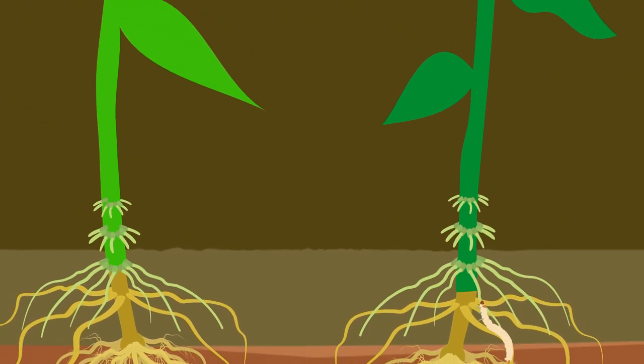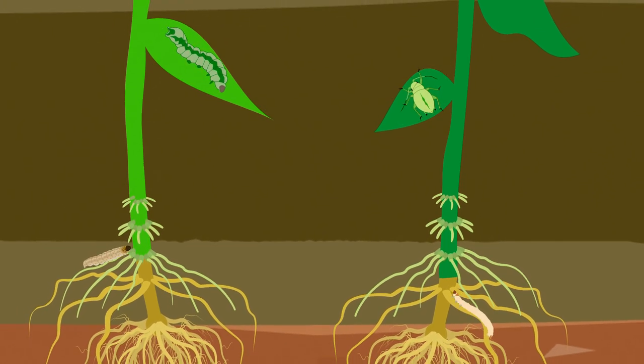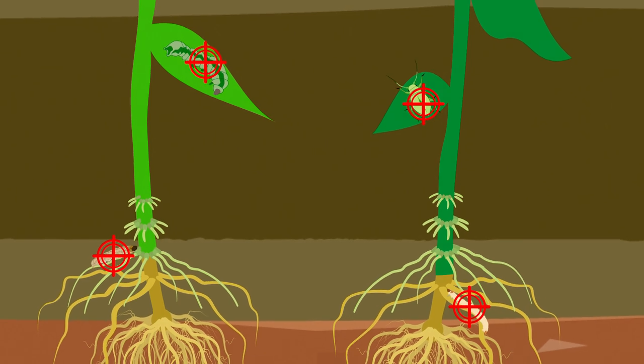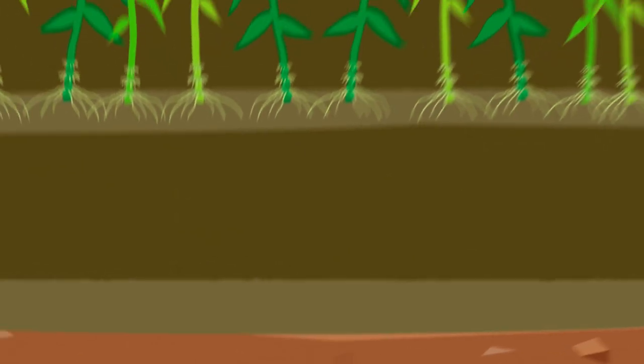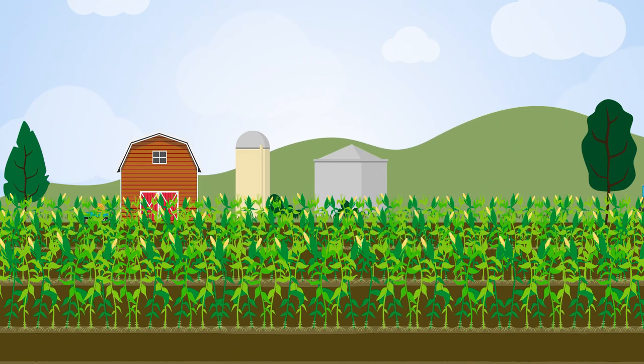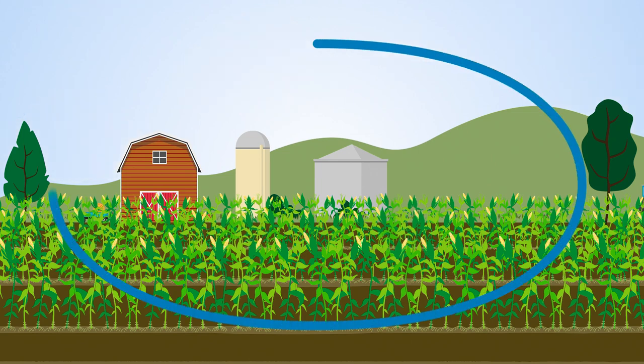Learning about its tricks allows us to understand the strategies that herbivores can use to exploit plants. Ultimately, this knowledge may pave the way for the sustainable control of agricultural pests.